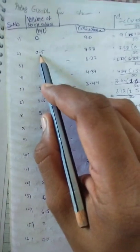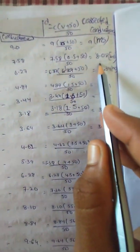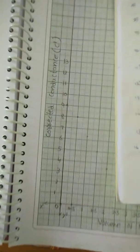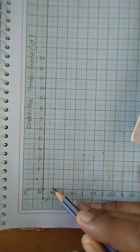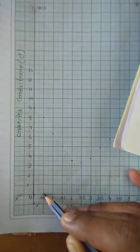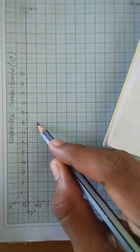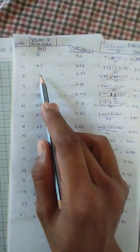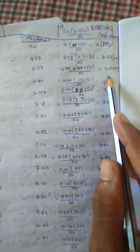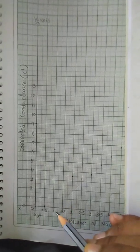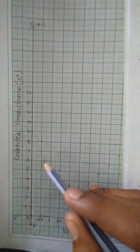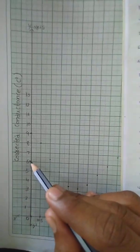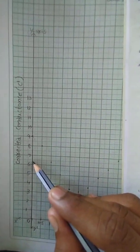For 0.5 ml of sodium hydroxide, the obtained corrected conductance is 8.08 mS. Similarly, for 1 ml of sodium hydroxide, the obtained corrected conductance is 6.39 mS.